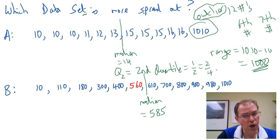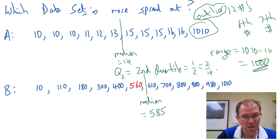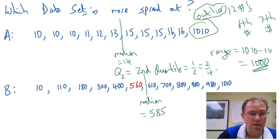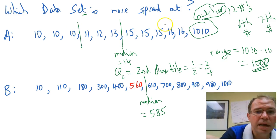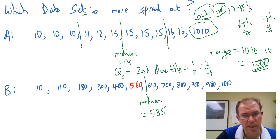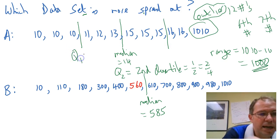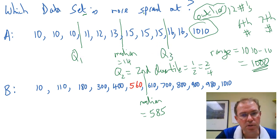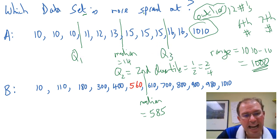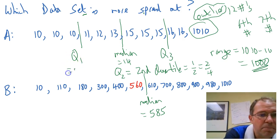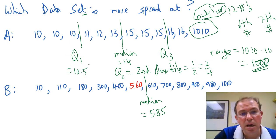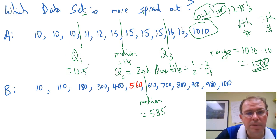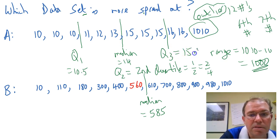I wonder how far a quarter of the way up the data would be. We have 12 numbers, so if we split the numbers into quarters we'd have three numbers, three numbers, three numbers and three numbers. So it's fairly obvious that the first quartile would be there and the third quartile would be there. The first quartile is a quarter of the way up, and the third quartile is three quarters of the way up. We don't have a number exactly at the first quartile — we go halfway between 10 and 11, so it would be 10.5. And halfway between 15 and 16 gives 15.5 for the third quartile.